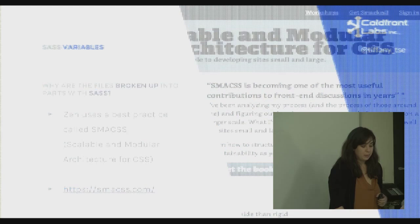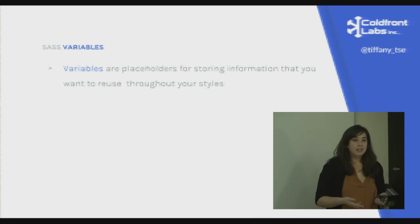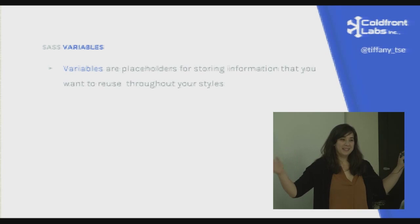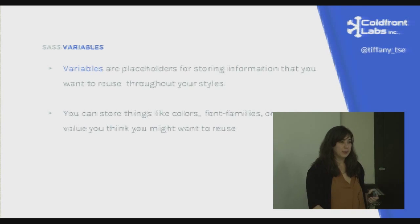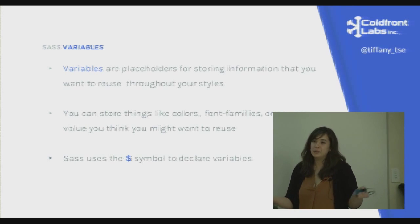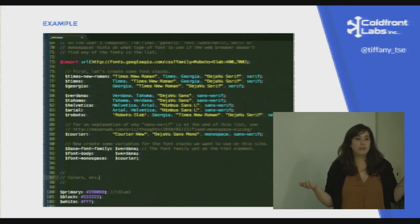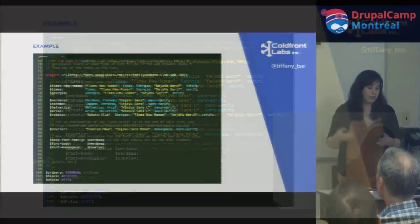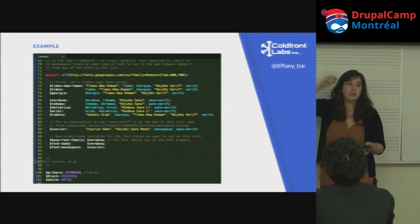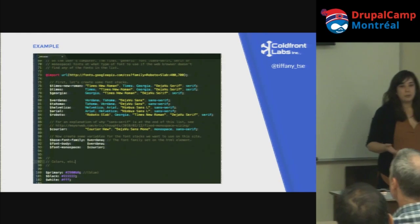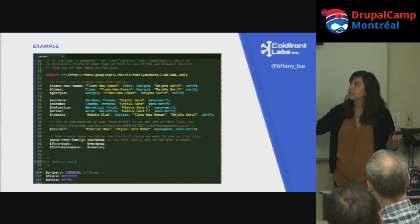The next thing in terms of syntax are Sass variables. Just like variables in any other language, you define them and give them a value — they're placeholders for information you want to reuse throughout your site. With Sass you define them using a dollar sign. For example, you can define font families inside variables, giving a font-family name with a font stack. You can also define colors in variables — pretty much anything.